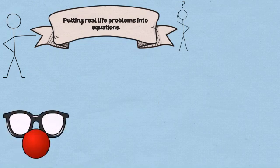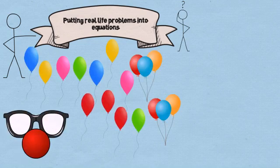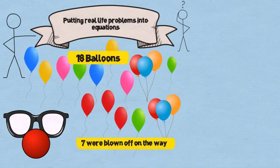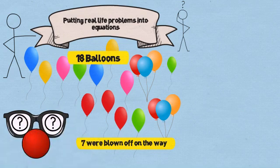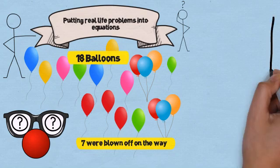A clown was invited to perform at a birthday party. The clown arrived at the party with 18 balloons. On the way to the birthday party, 7 balloons got blown away. So how many balloons did the clown have in the beginning?